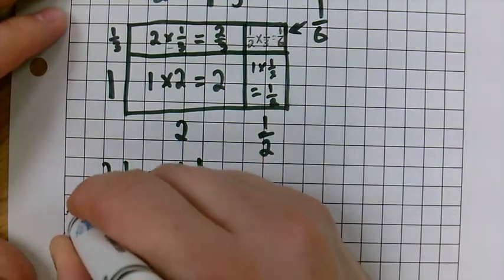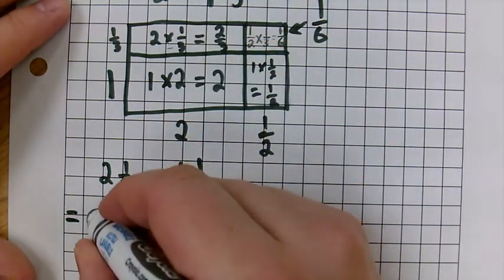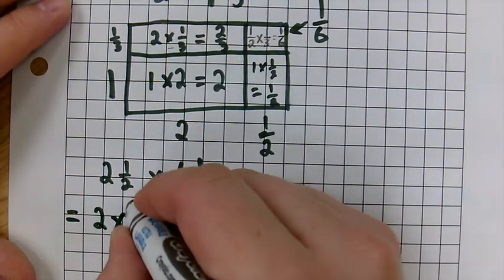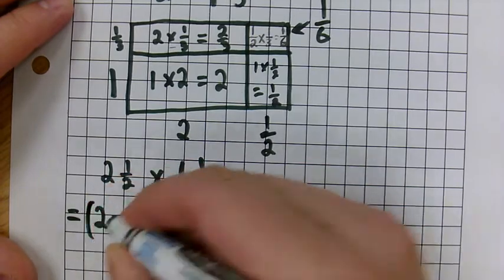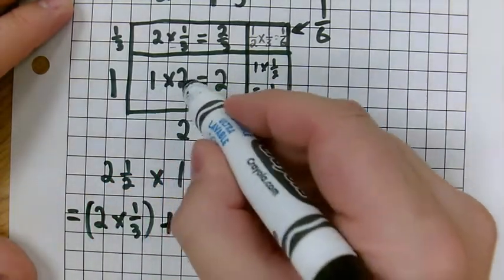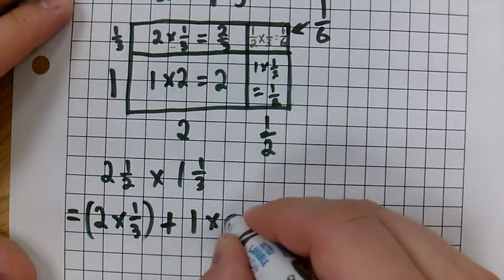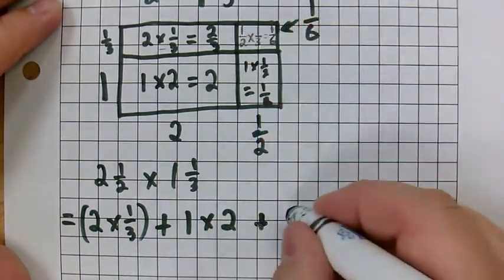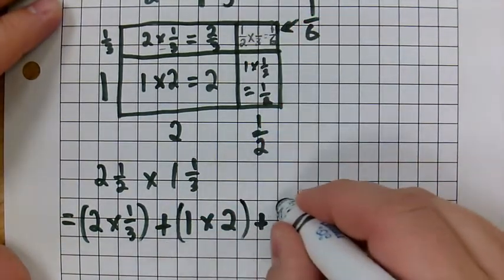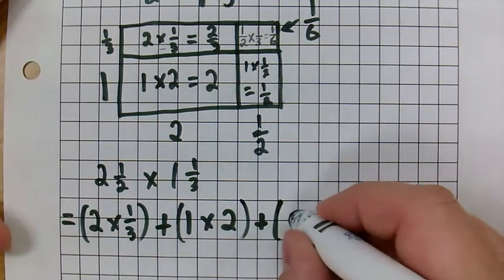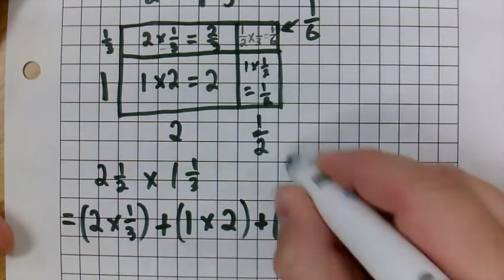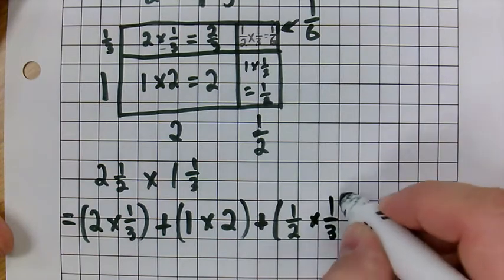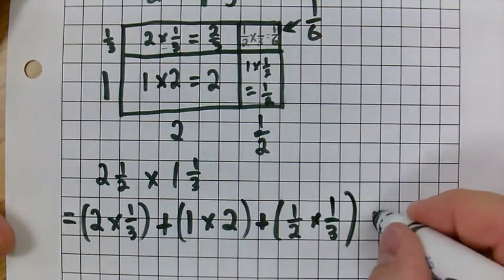We're going to start with 2 and 1 half times 1 and 1 third. It's actually equal to each of these things here. It's equal to 2 times 1 third plus 1 times 2 plus 1 half. I don't really need these brackets because it's still BEDMAS, but I'm writing in here 1 half times 1 third plus 1 times 1 half.